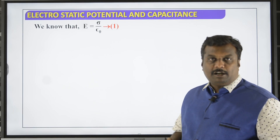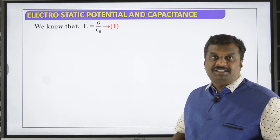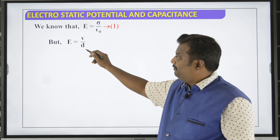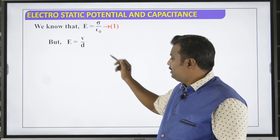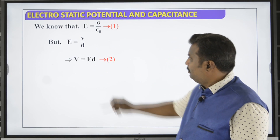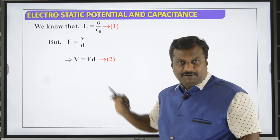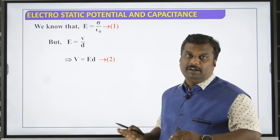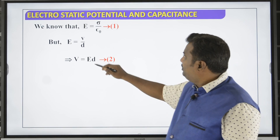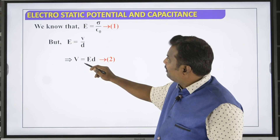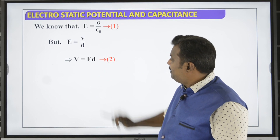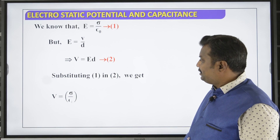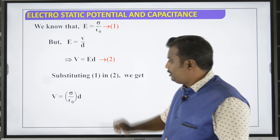Here we talk about surface charge density: plus σ and minus σ on the plates. Electric lines of force go from the positive terminal to the negative terminal. The electric field E equals σ divided by ε₀. Let d be the distance of separation, plus σ be the surface charge density of plate A, and minus σ be the surface charge density of plate B. The electric field between the plates is E equals σ by ε₀ — call this equation 1.